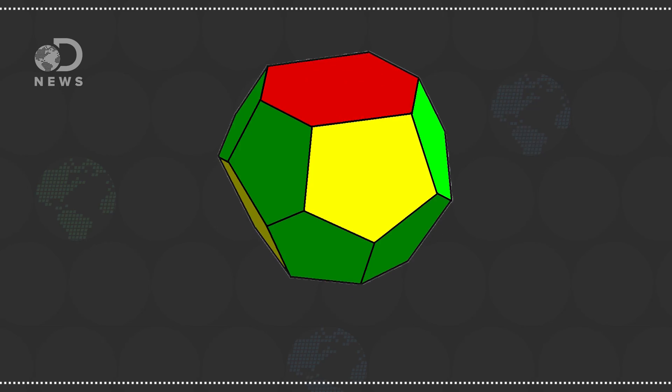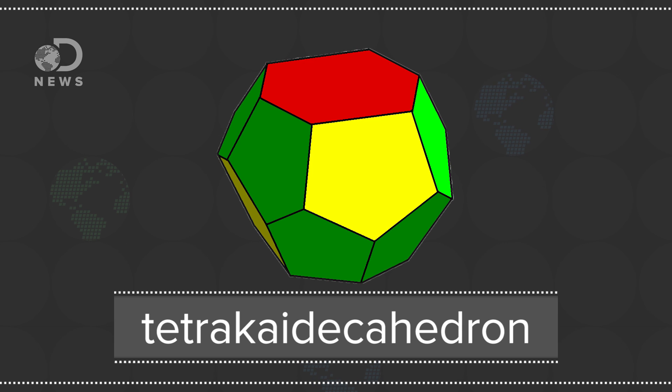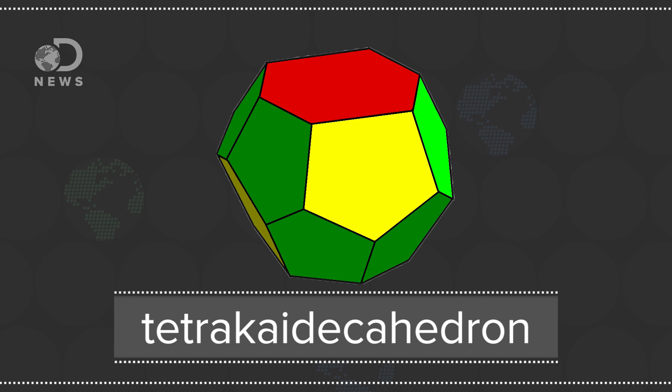This stratum granulosum is arranged like a checkerboard pattern, except instead of two-dimensional squares, it's flattened versions of three-dimensional tetrakaidecahedrons. That means they have fourteen sides, with six rectangular and eight hexagonal.